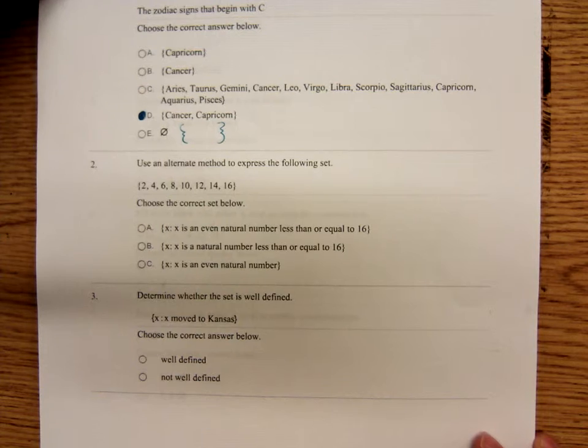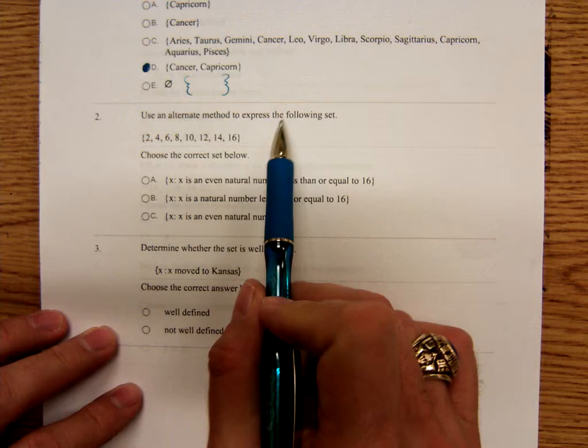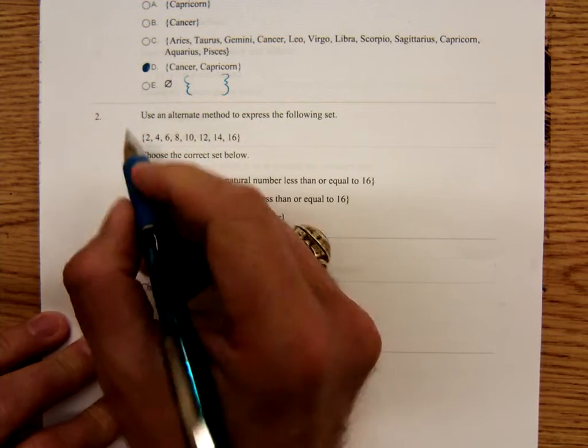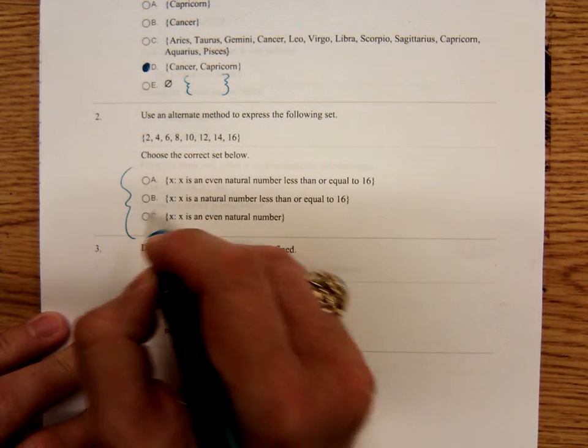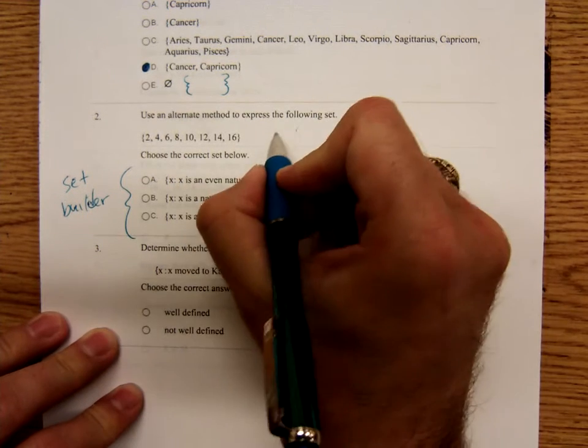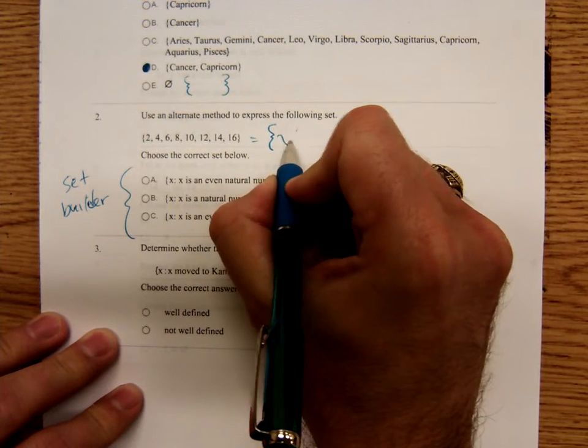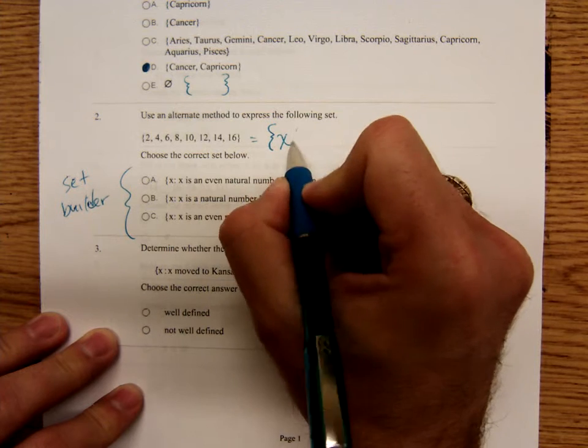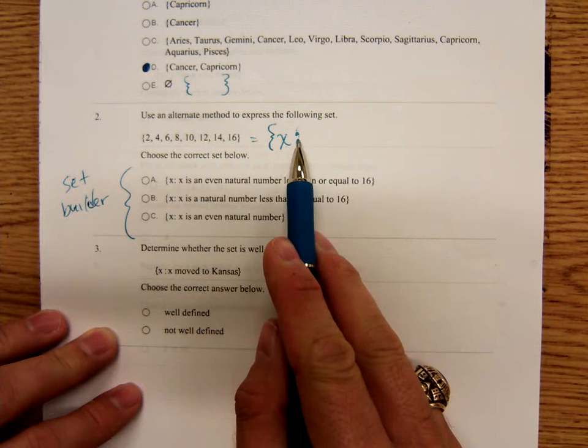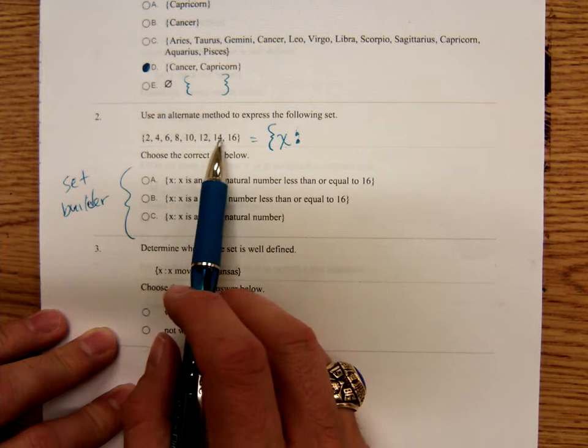Now, number two says, use an alternate method to express the following set. You see, this is the listing set. You're going to write a set builder notation. Set builder notation, you start off like this, the set. And then you write an X followed by either a vertical bar or a colon. They're using a colon. And you read this, the set of all X such that, let's see, 2, 4, 6, 8, 10, 12, 14, 16.